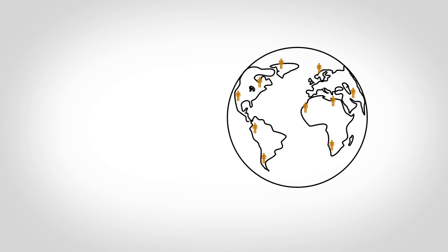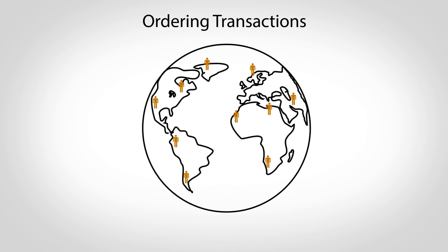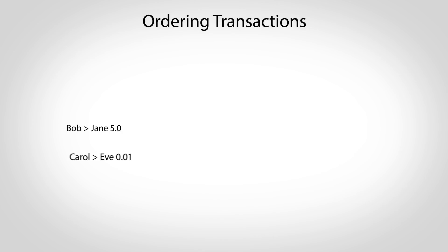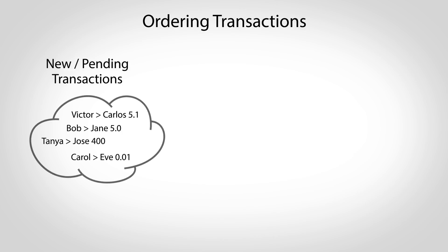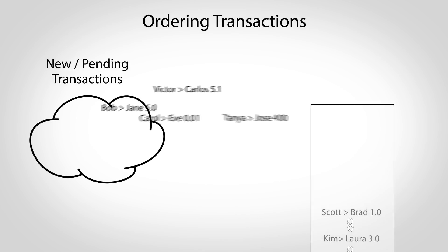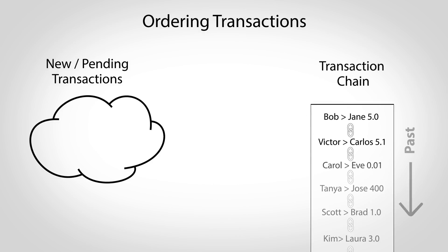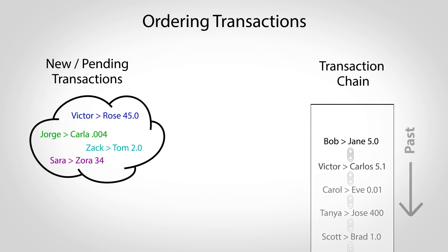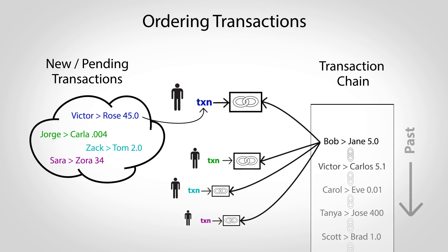Bitcoin prevents this by providing a way for the entire world to decide on transaction order. As new transactions are created, they go into a pool of pending transactions, and from here they'll be sorted into a giant chain that locks in their order. To select which transaction is next, a kind of mathematical lottery is held. Participants select a pending transaction of their choice and begin trying to solve a special problem that will link it to the end of the chain. The first person to find a solution wins and gets to have their transaction selected as next in the chain.